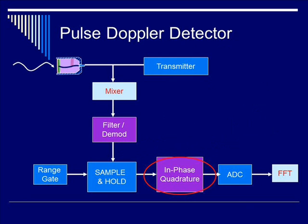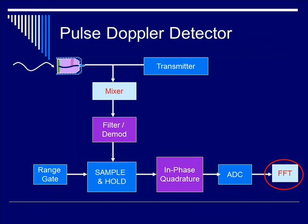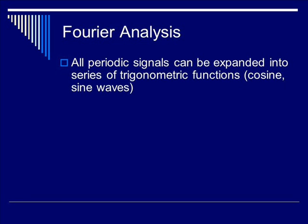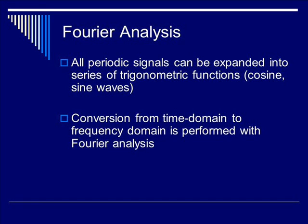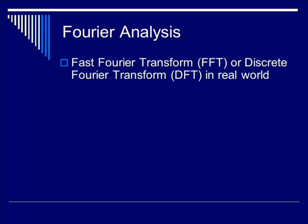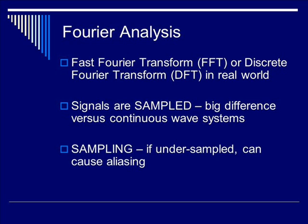The output from the sample-and-hold gets fed into the in-phase quadrature circuit, which is shown schematically. In effect, it tells you the direction of the Doppler signal — whether it is towards or away. After digitizing from analog to digital, it is fed into a fast Fourier transform circuit. Fourier analysis takes all periodic signals and expands them into trigonometric functions, converting from time to frequency domain. It works even on non-periodic signals. Fast Fourier transform or discrete Fourier transform are used in practice. Importantly, the signals are sampled, which is a key difference from continuous wave systems. If under-sampled, it can cause aliasing.